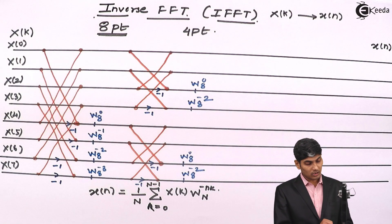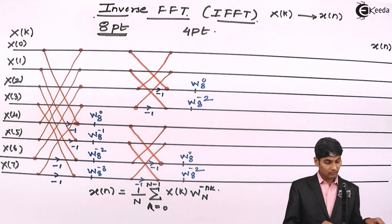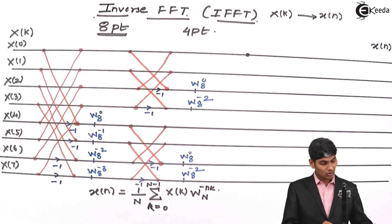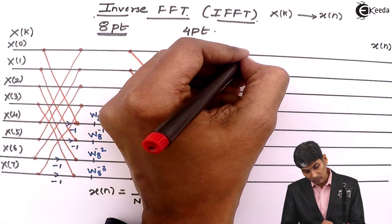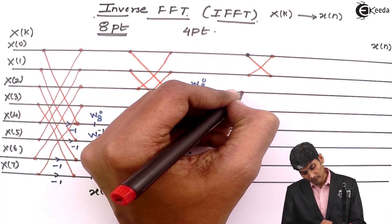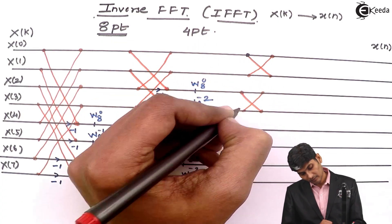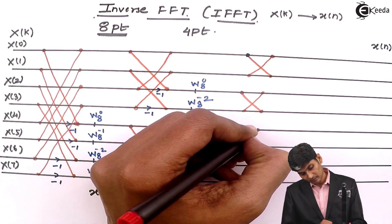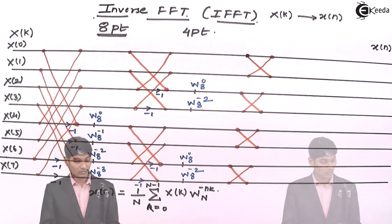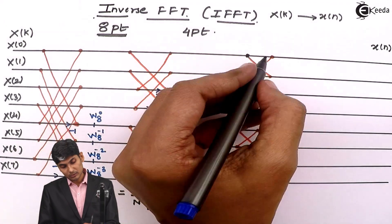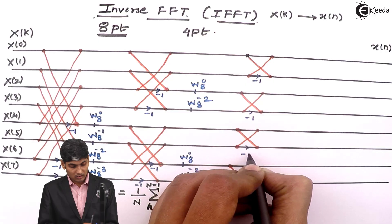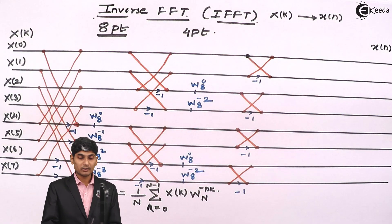Then we go for the final stage. In the final stage, we will have only two-line crisscrosses. Then we put minus 1 everywhere on the relevant lines.